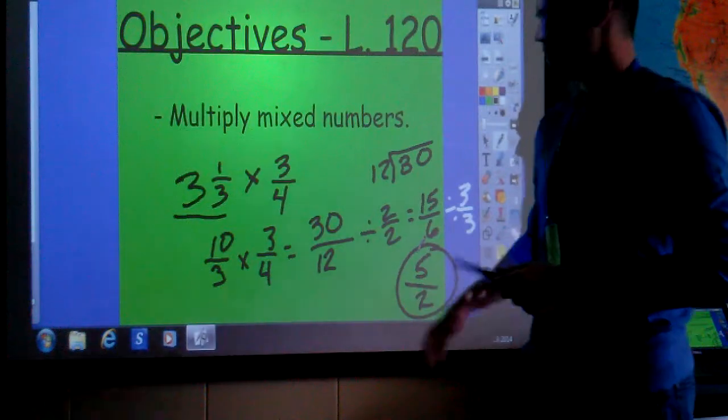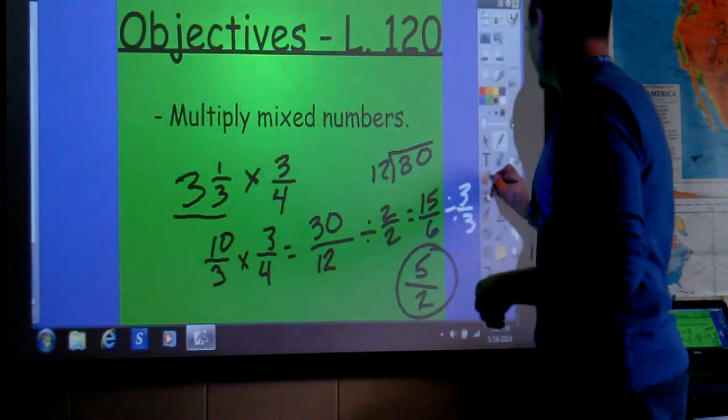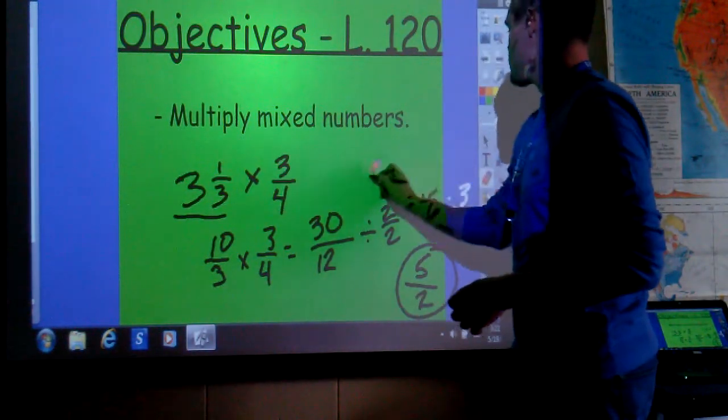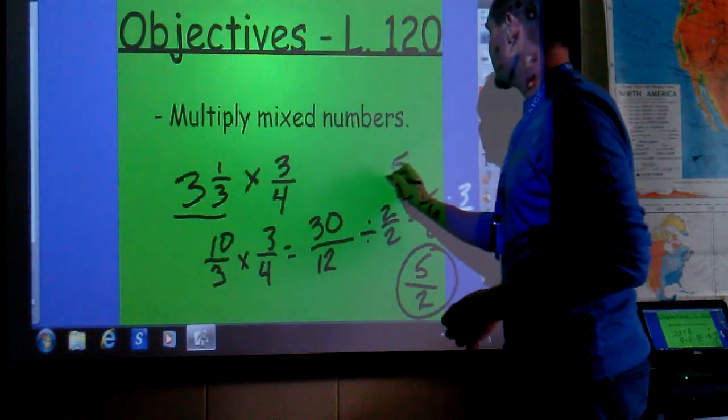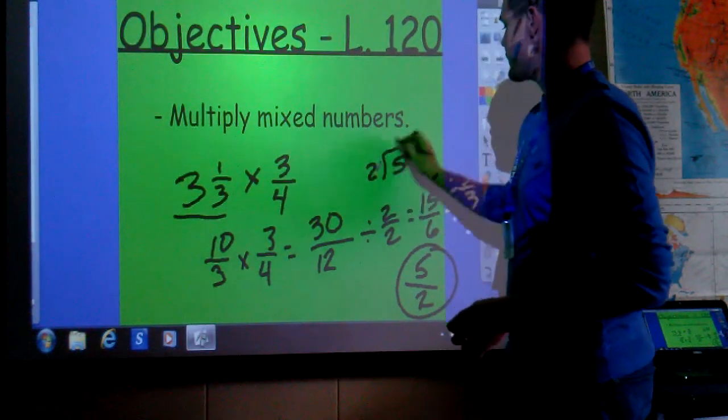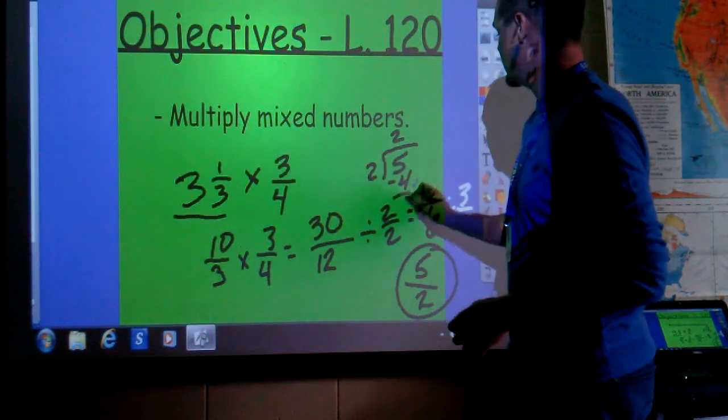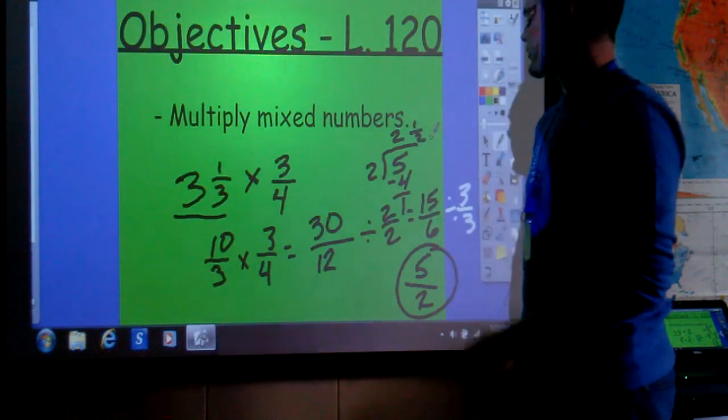So, 5 halves is my answer. It is an unreduced fraction, though. So, now I'm going to take and divide 5 by 2. 2 times 2 is 4. I have a remainder of 1 half.